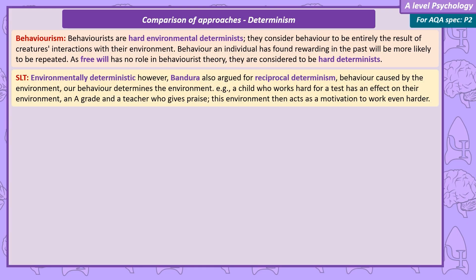Social learning theorists are environmentally deterministic. Bandura also argued for reciprocal determinism: not only is our behaviour caused by the environment, but the environment is also determined by our behaviour. For example, a child who works hard for a test has an effect on the environment — earning an A and teacher praise — and this environment then acts as motivation to work even harder.